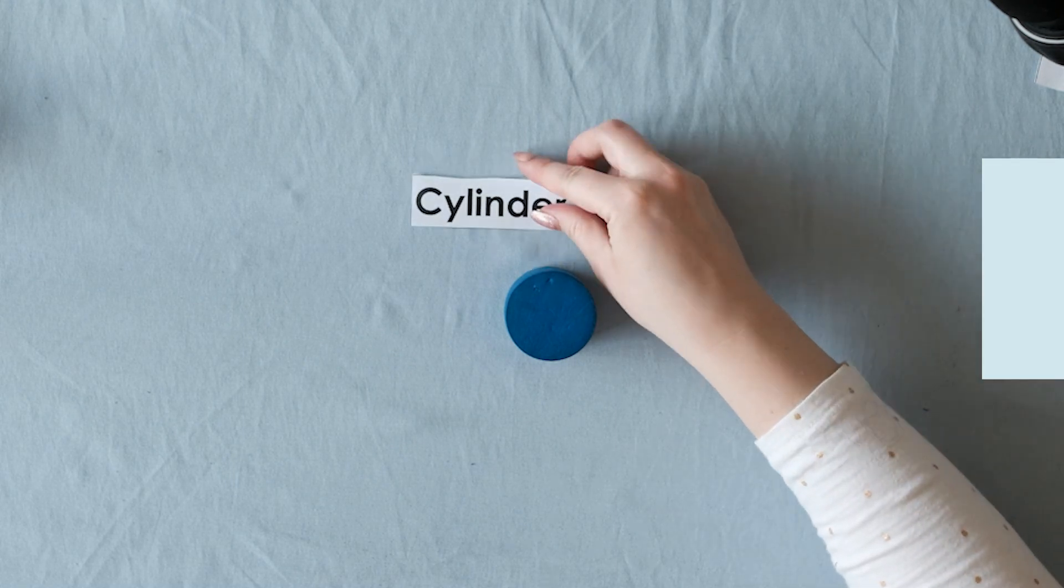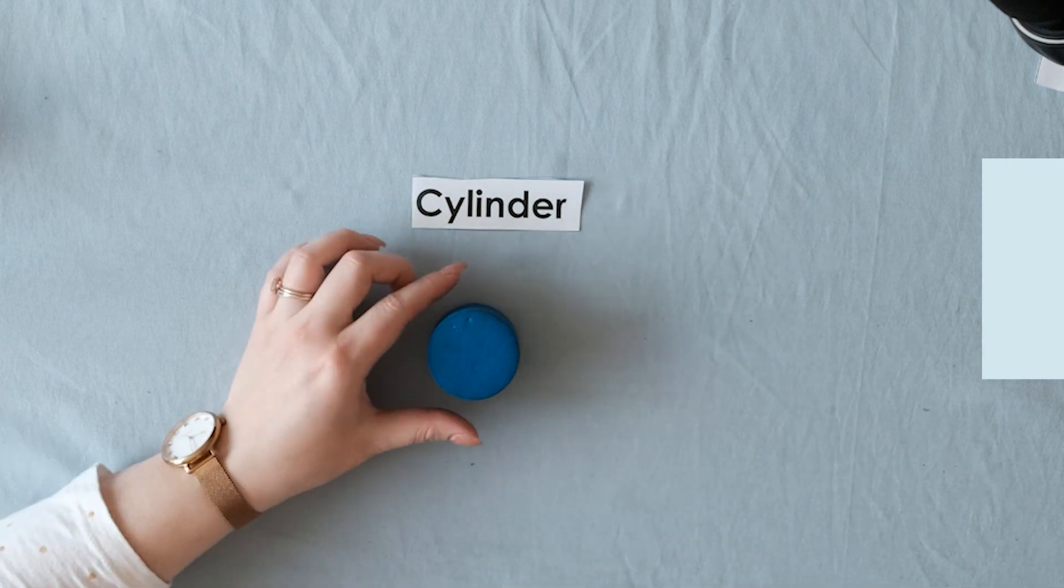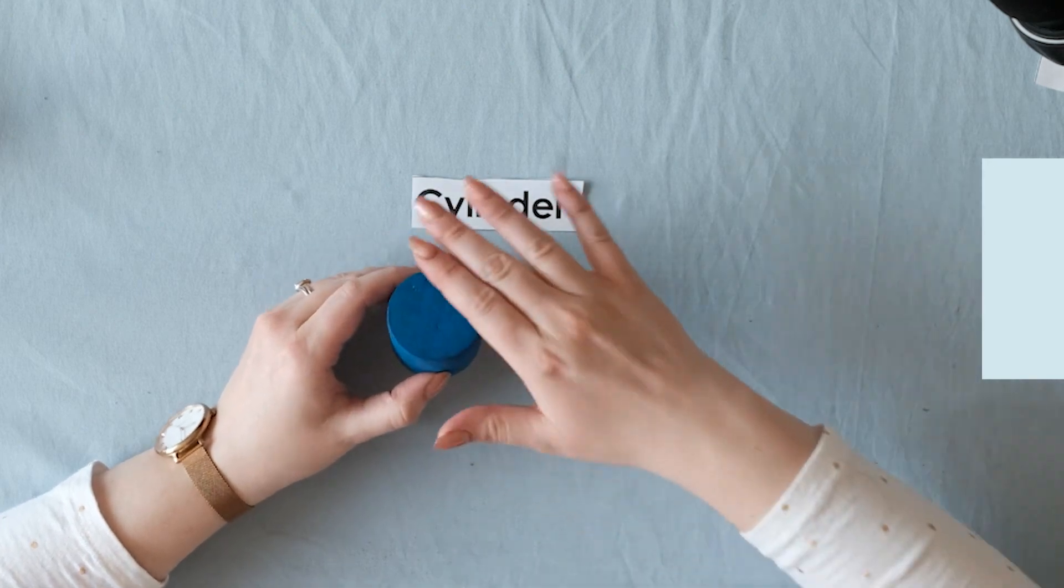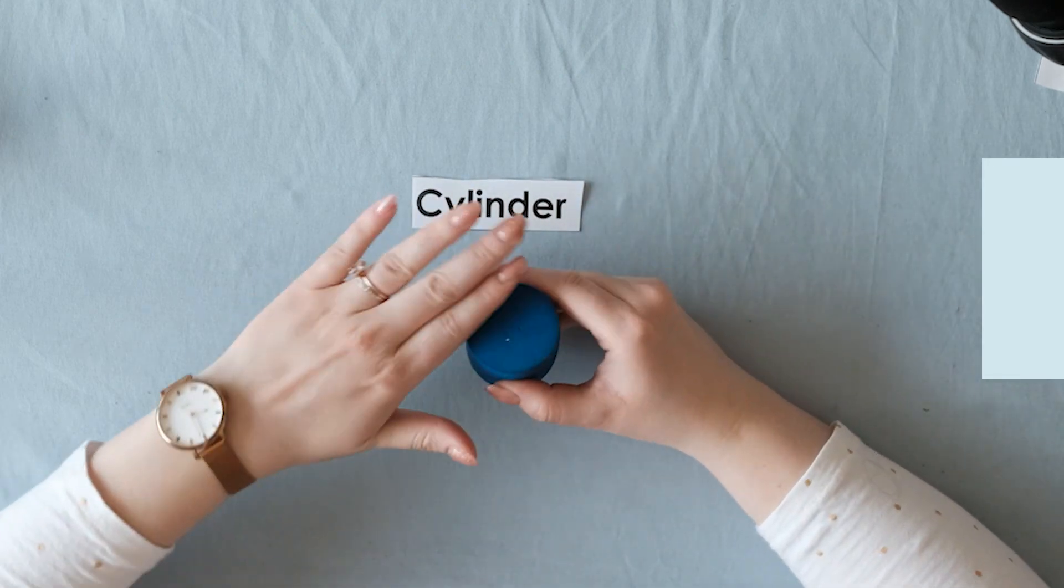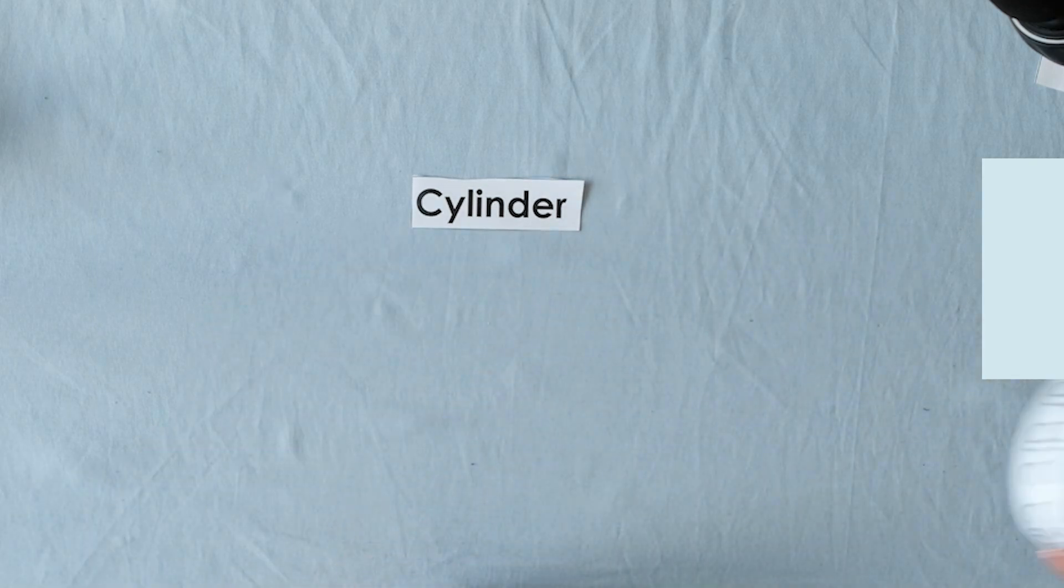Now, a cylinder has how many faces? Remember, the face is the flat part. This is one face, and this is the second face, so it has two faces. We're going to be learning about what makes each 3D shape special.